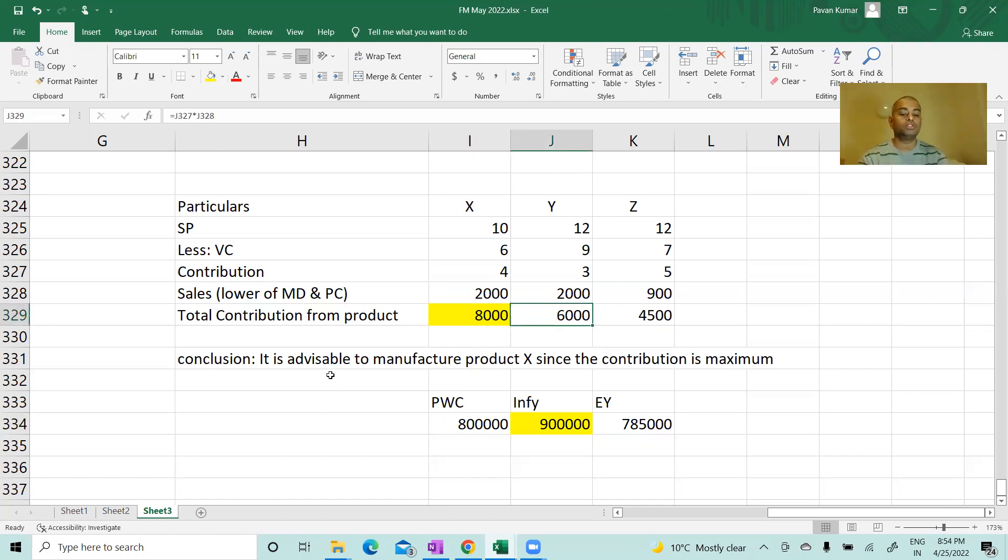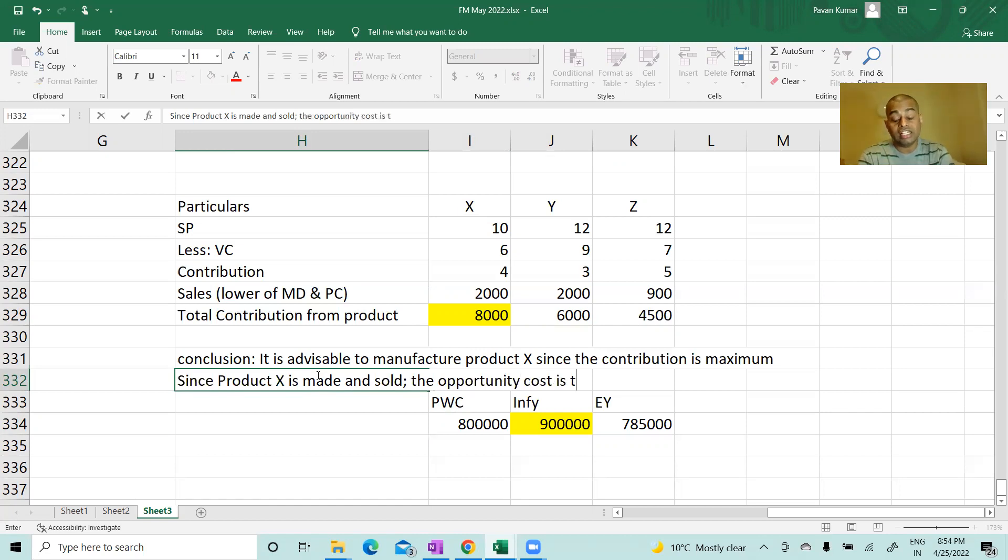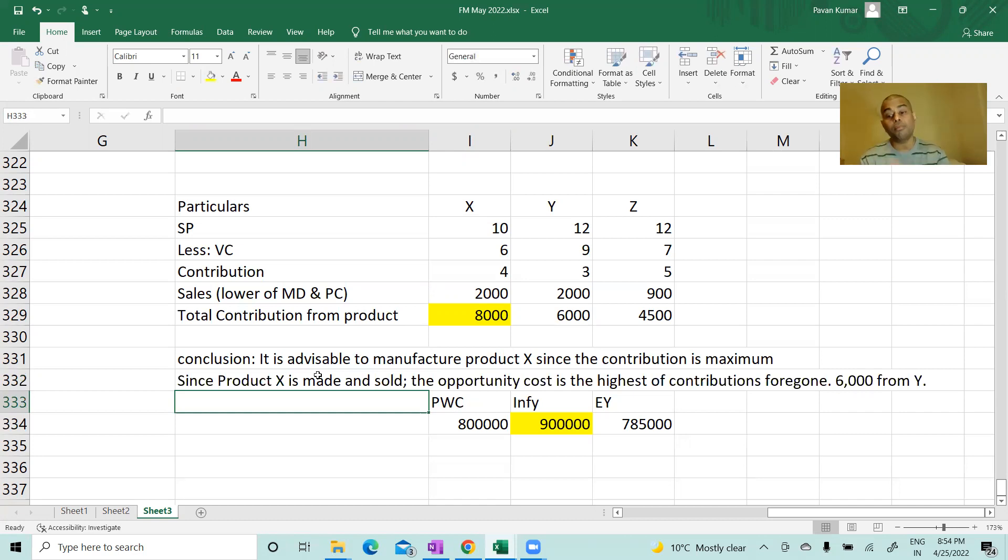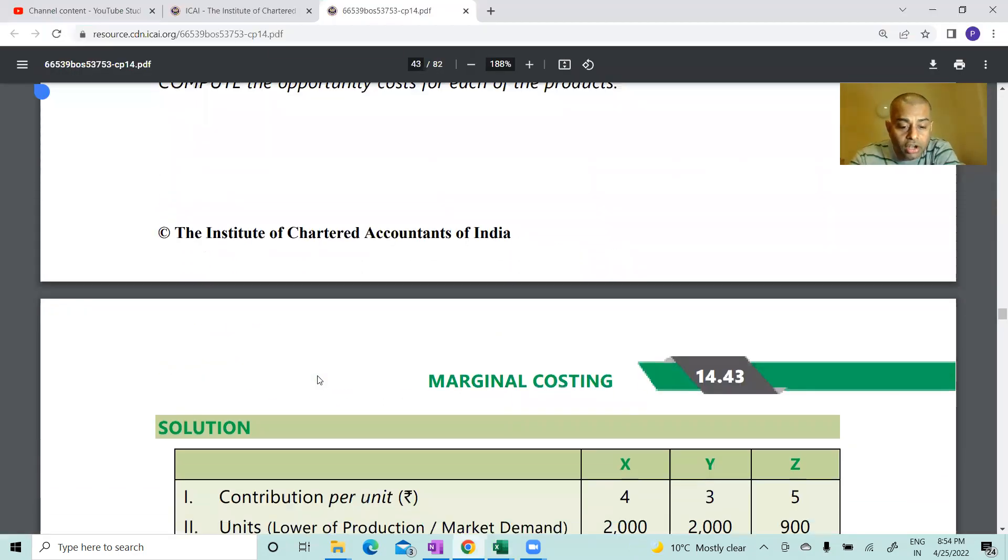No, it is only 8 lakhs. Your opportunity cost is the highest of the contributions you have foregone. You understand? So here what is the opportunity cost? 6000. So since product X is made and sold, the opportunity cost is the highest of contributions forgone. That means 6000 from product Y. This is the opportunity cost for manufacturing product X. By manufacturing product X, you are foregoing contribution from Y and Z, but you will take only the highest. That's all. This is the problem - compute the opportunity cost.